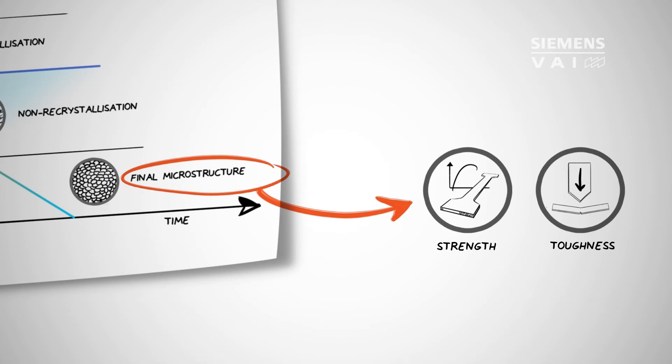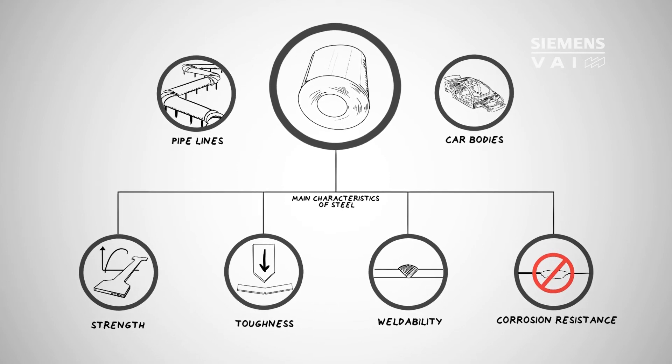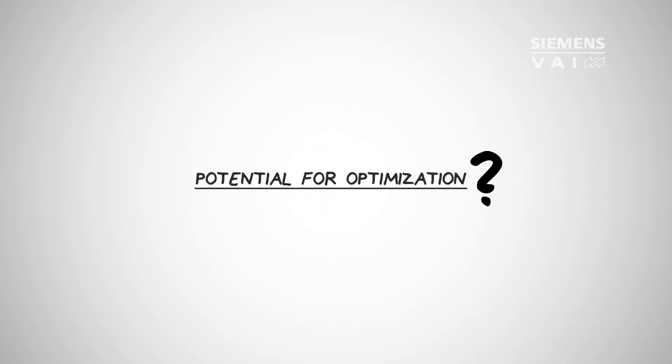In addition fine grain also means first-rate toughness which is another key feature of API grades. We now know how the ideal microstructure for pipeline applications is achieved and logically the question arises as to whether or not there's potential for further optimization. Naturally there is.